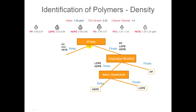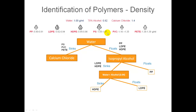Now let's look at the three plastics that sank in water: polystyrene, polyvinyl chloride, and polyethylene terephthalate. We take our calcium chloride solution, which has a density of 1.4, and place all three of them inside it. None of these plastics have a density higher than calcium chloride, so they should all float — and that's exactly what happens. None of them sink; all of them float.